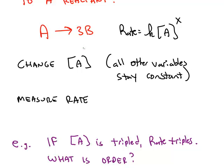To find the order, we want to keep every variable, such as temperature, constant, but we're going to make a change to one variable, in this case the concentration of chemical A, and we measure the rate as a result of changing that concentration.